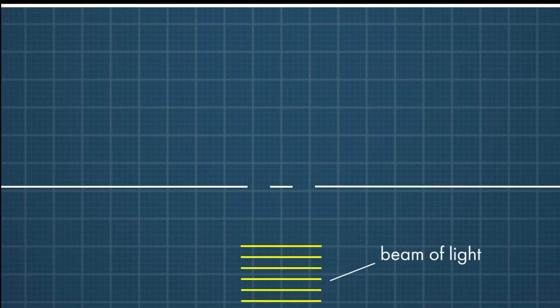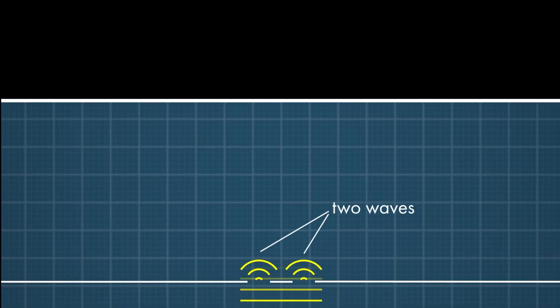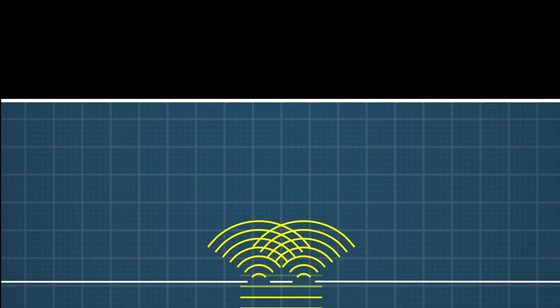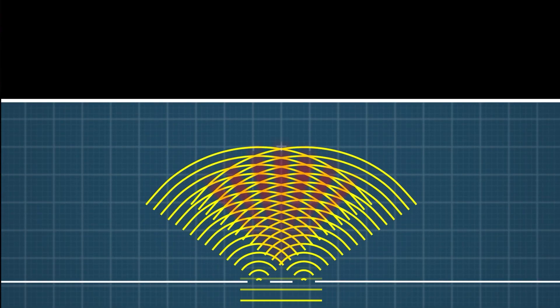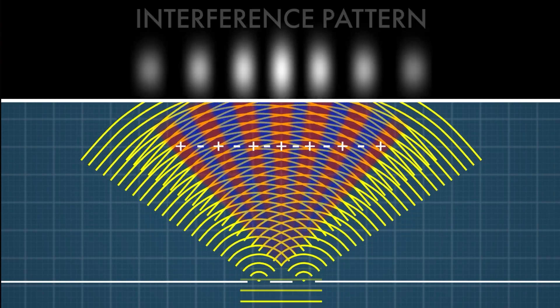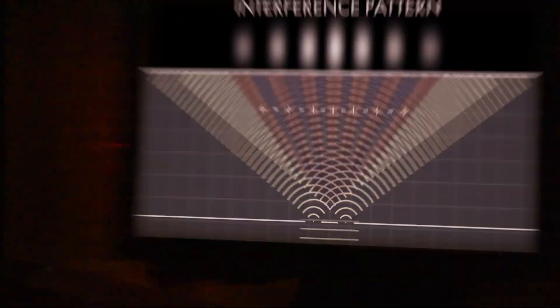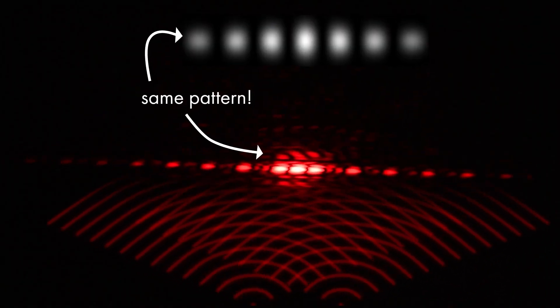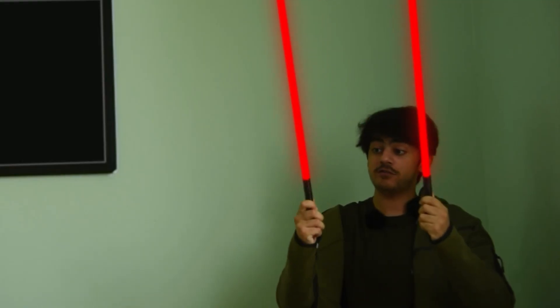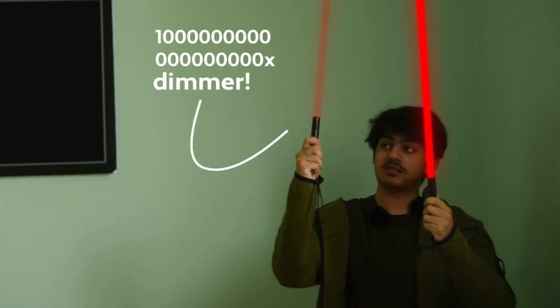Take interference. We split a beam of light into two waves. In some places they add up, in others they cancel, giving us a pattern. So here, light acts like a wave — that's no surprise. But if we use a much dimmer light, we get dots?